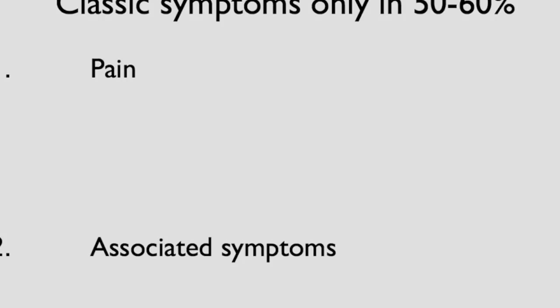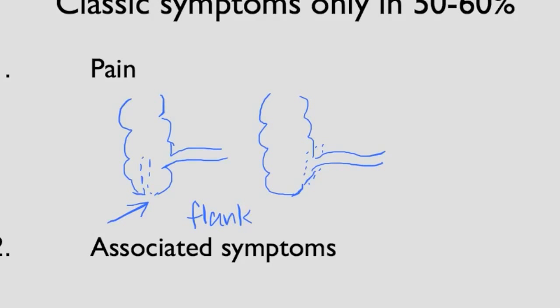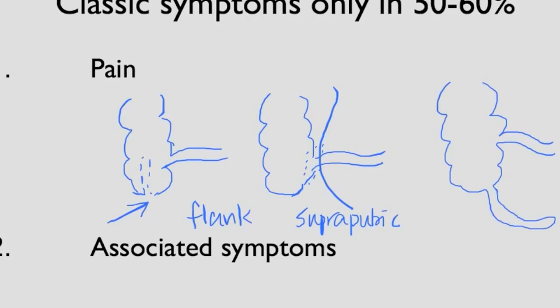Why is that? The pain may not be where we expect because of anatomical variation. If the patient's appendix is retrocecal — behind the cecum — the pain may go up to the right flank instead of the right lower quadrant. If it is retroiliac, behind the ileum, it might irritate the ureter, causing pain in the testicle, suprapubic area, or even dysuria. If the appendix is low in the pelvis, pain may be in the midline, left lower quadrant, or even the rectum.